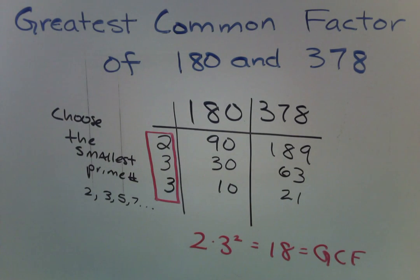Make sure you watch the next video on finding the least common multiple of 180 and 378. The process is very simple and similar to this except at the very end.